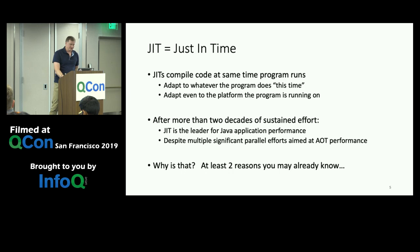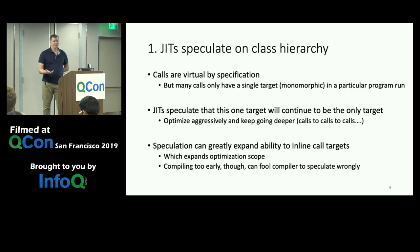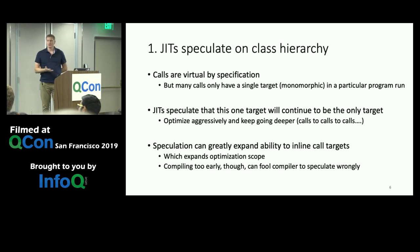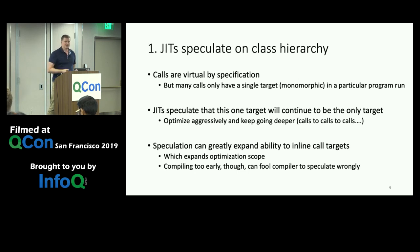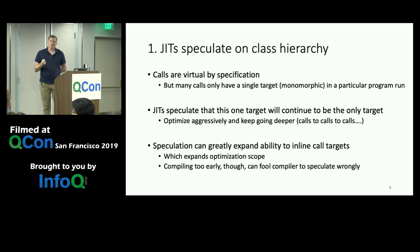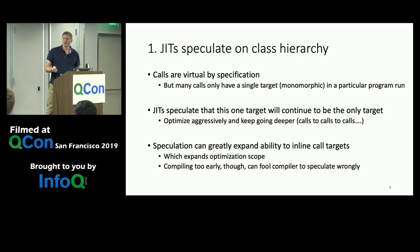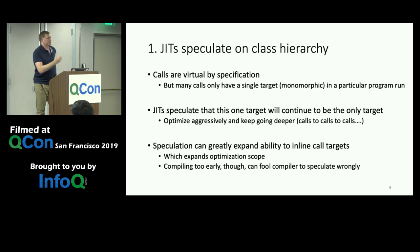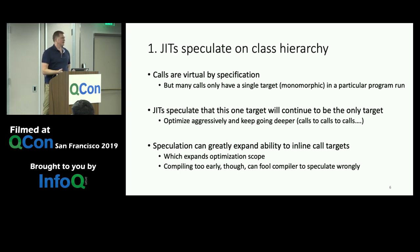After more than two decades of sustained effort, JITs are the leader in Java application performance. Java's dynamic language nature lends itself very well to JIT compilation. JITs aggressively speculate on class hierarchy. In Java, calls are virtual by specification, meaning they can be overridden. The JIT can see that many calls only have a single target at runtime, speculate that will remain true, inline the target, and optimize the surrounding code — generating much faster code.